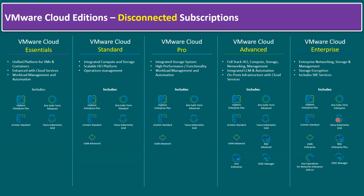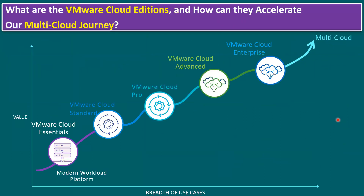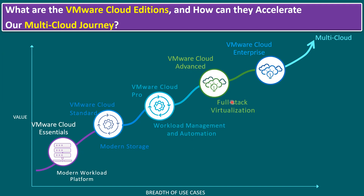Now let's map the key concept: how do VMware Cloud Editions accelerate the multi-cloud journey? Essential serves as the modern workload platform. Standard becomes the modern standard environment. Pro enables workload management and automation features. Advanced provides a full-stack virtualization — the full SDDC stack — making the customer environment a private cloud. Enterprise adds further services needed for cross-cloud integration.